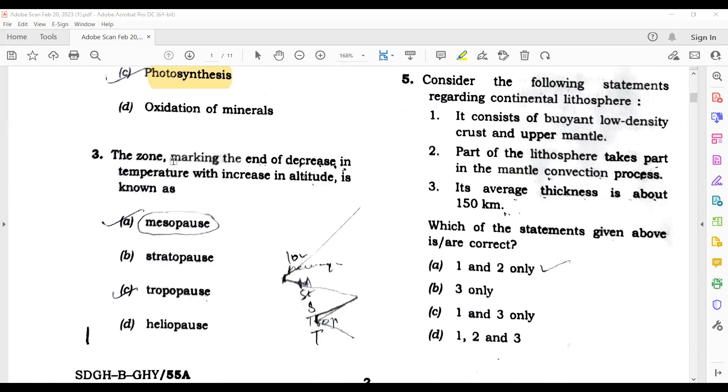Now the third question - the zone marking the end of the decrease in temperature with increase in latitude. Its correct answer is mesopause. But some are debating it with tropopause. But its answer is mesopause.